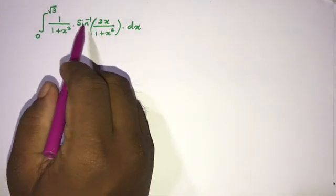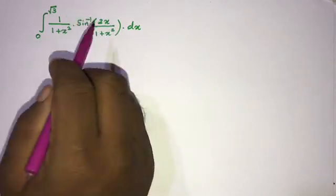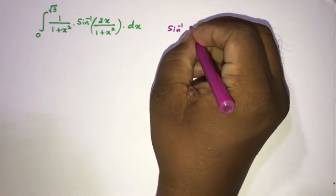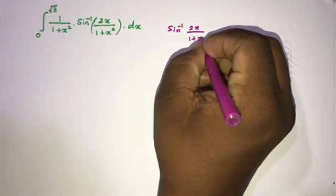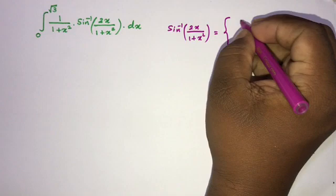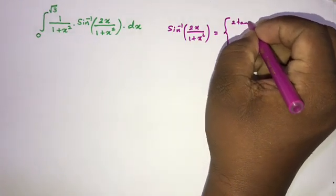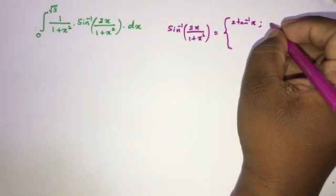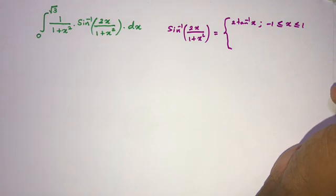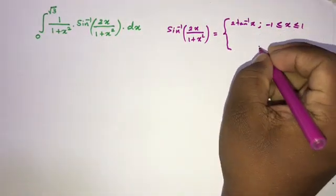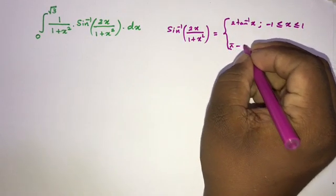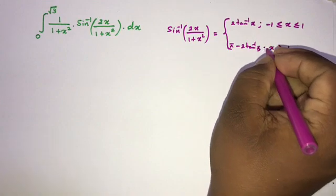First, we recall a familiar identity: inverse sine of (2x over 1 plus x squared) equals 2 times inverse sine of x when minus 1 is less than or equal to x less than or equal to 1. And when x is greater than 1, this equals pi minus 2 times inverse sine of x.